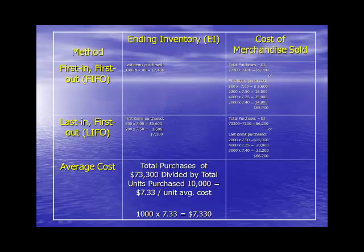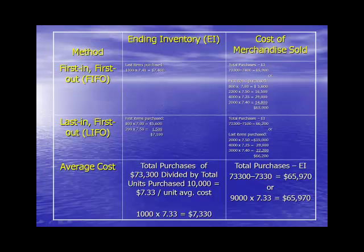Average cost is a little bit different. You need to track the average cost per unit purchased by adding up your total purchases for the year and dividing by the total units purchased. So $73,300 divided by 10,000 units equals $7.33 per unit average cost. Since there were 1,000 units in ending inventory, 1,000 times $7.33 equals $7,330. Cost of merchandise sold can be taken as either total purchases minus ending inventory, or the number of units sold times the $7.33 average, both equaling $65,970.